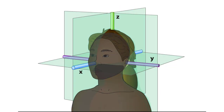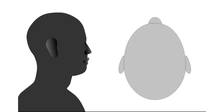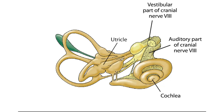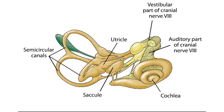Buried deep in the temporal bone, the main peripheral component of the vestibular system is an elaborate set of interconnected chambers, the labyrinth, that has much in common, and is in fact continuous with, the cochlea. The labyrinth consists of the two otolith organs, the utricle and saccule, and three semicircular canals.